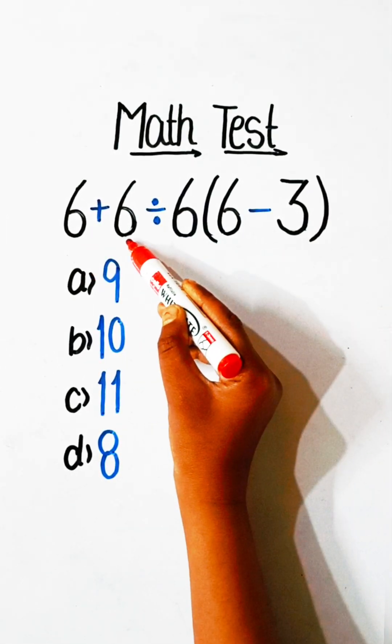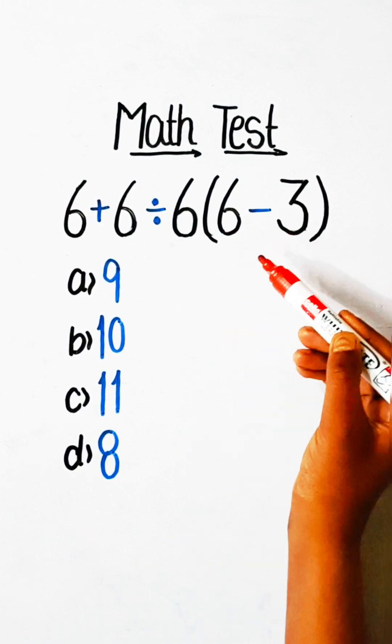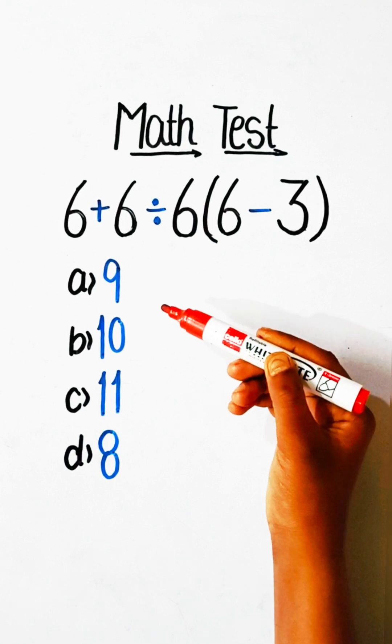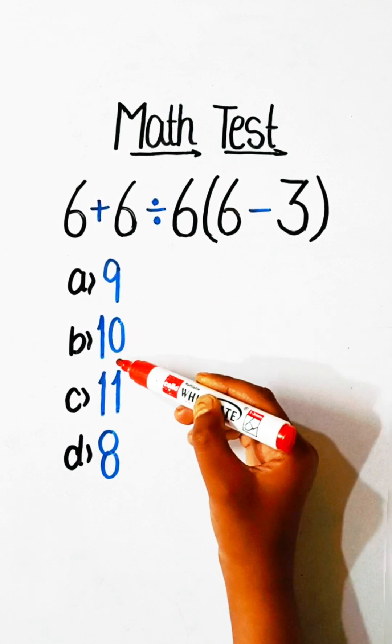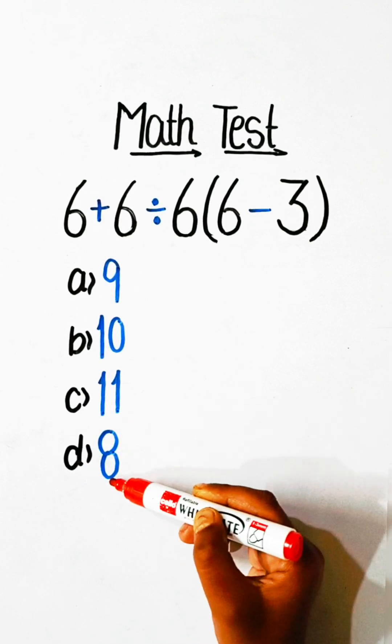6 plus 6 divided by 6 under bracket 6 minus 3 equals to what? Option A, 9. Option B, 10. Option C, 11. Option D, 8.